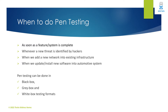When do we do pen testing? As soon as we complete and feature a system, we perform pen testing. Also whenever a new threat is identified — internally by white hat hackers — we need to perform pen testing. Whenever there is an addition in scope of the system, a new network, or something is added to the existing infrastructure, or whenever we update or install new software into the automotive system, we need to perform pen testing.